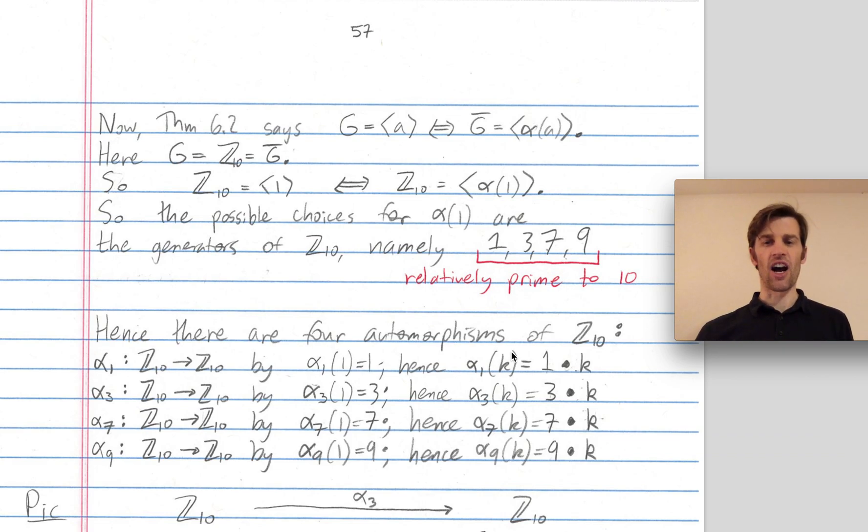Since an automorphism from Z mod 10 to itself is an isomorphism, it had better send the generator 1 to another generator of Z_10, namely 1, 3, 7, or 9. And those are in fact the only automorphisms of Z mod 10. We'll call those automorphisms alpha 1, alpha 3, alpha 7, and alpha 9.